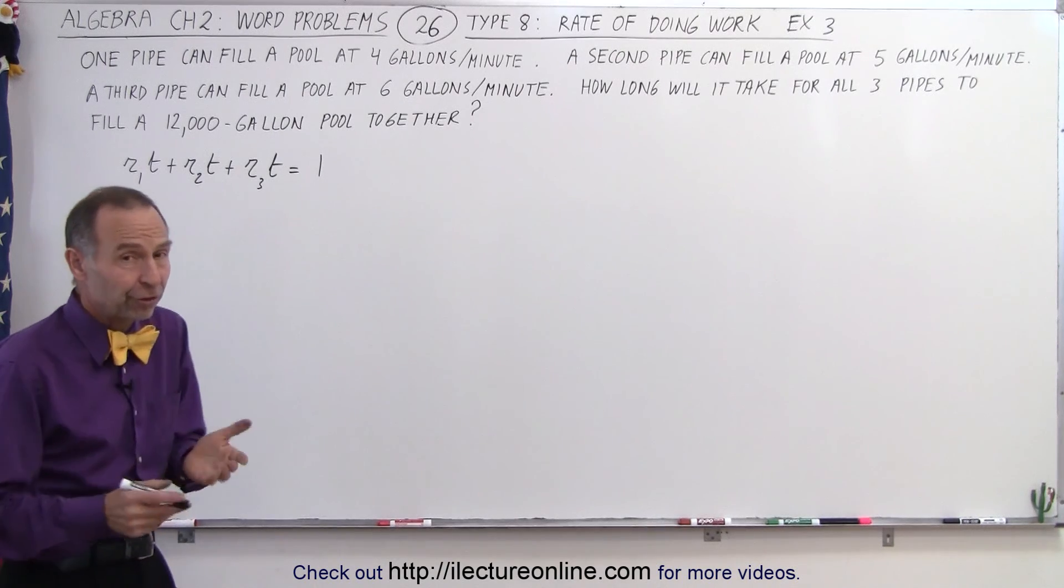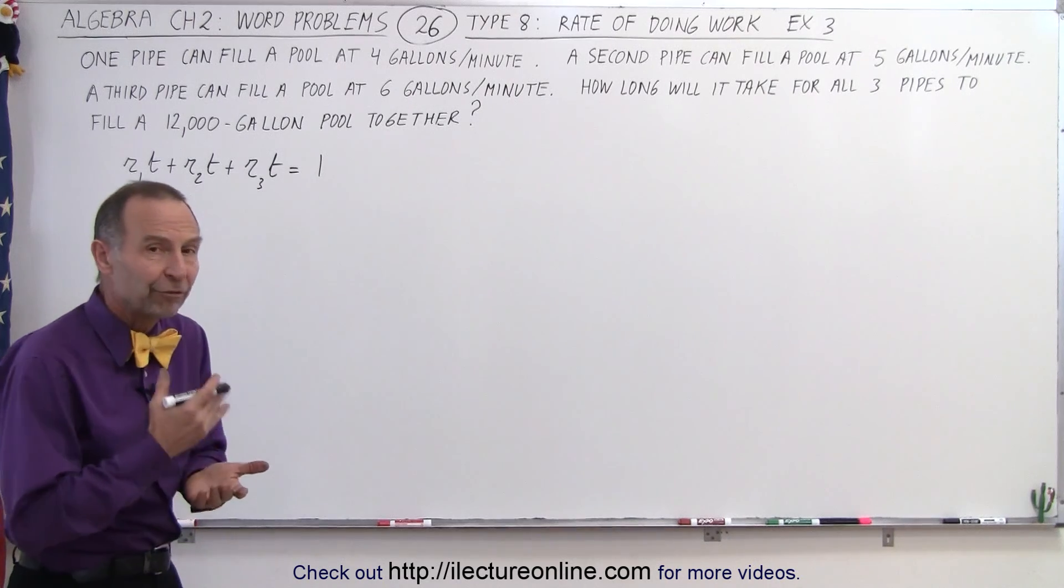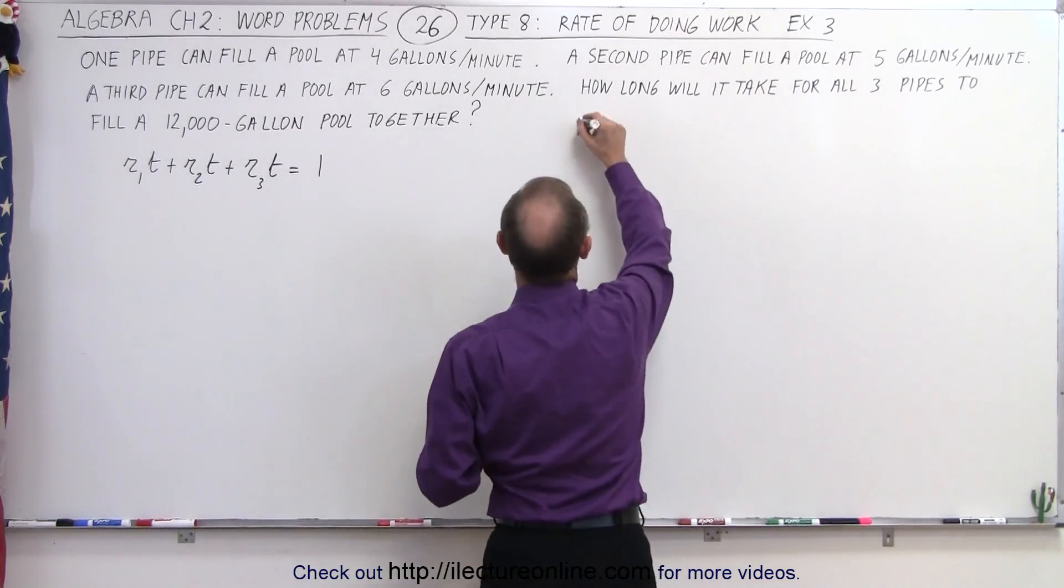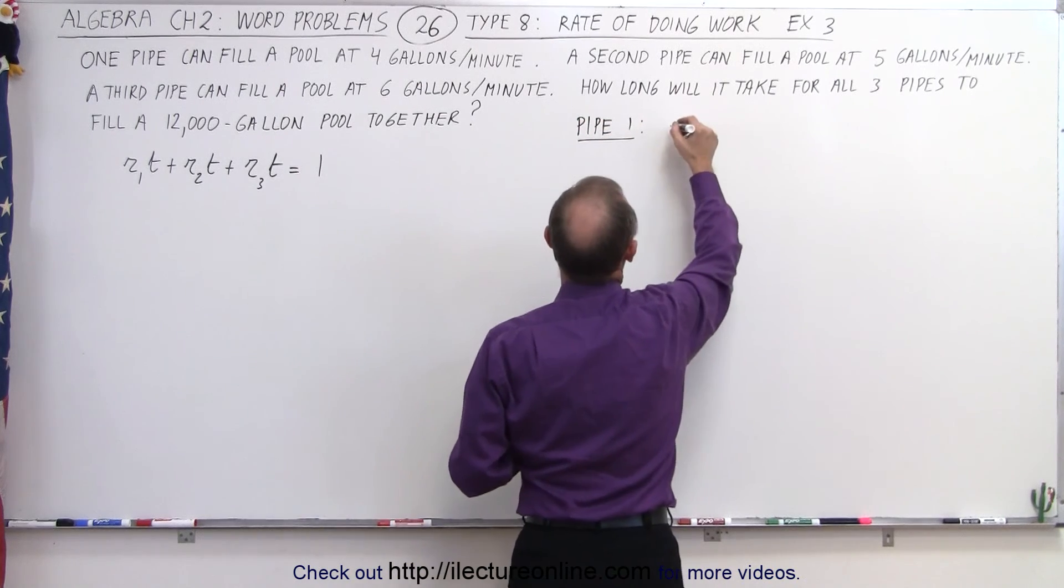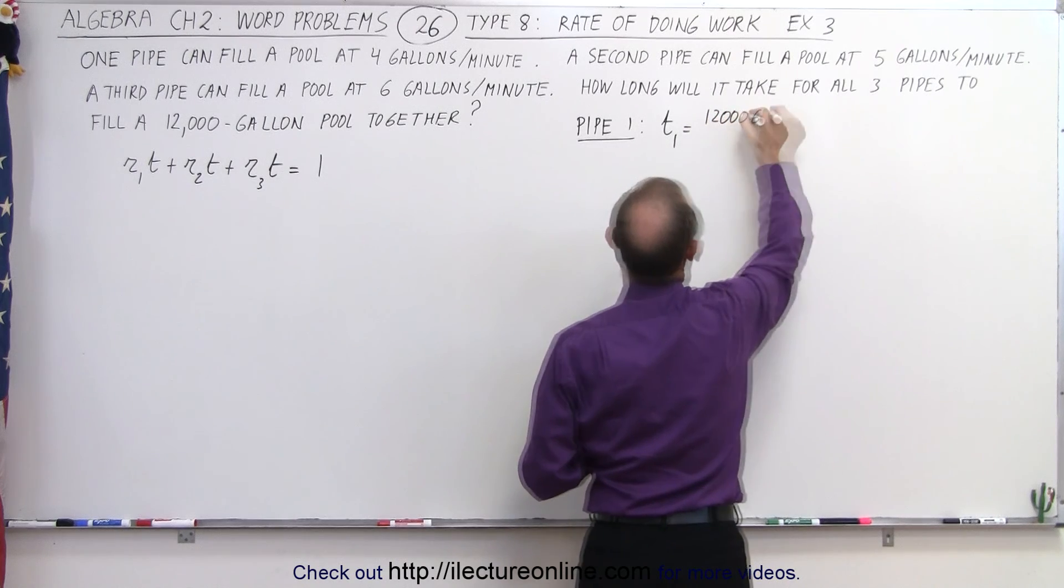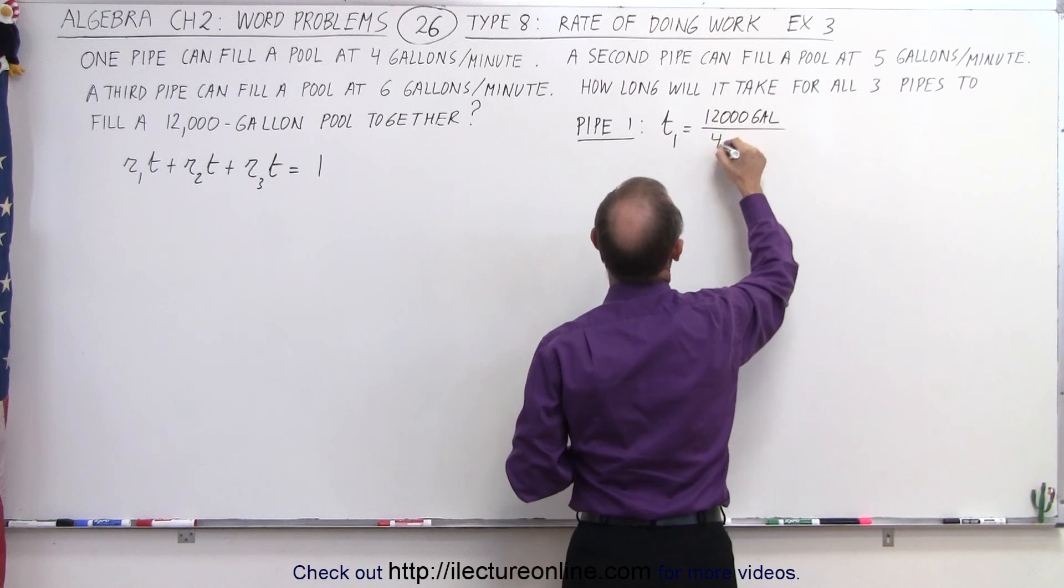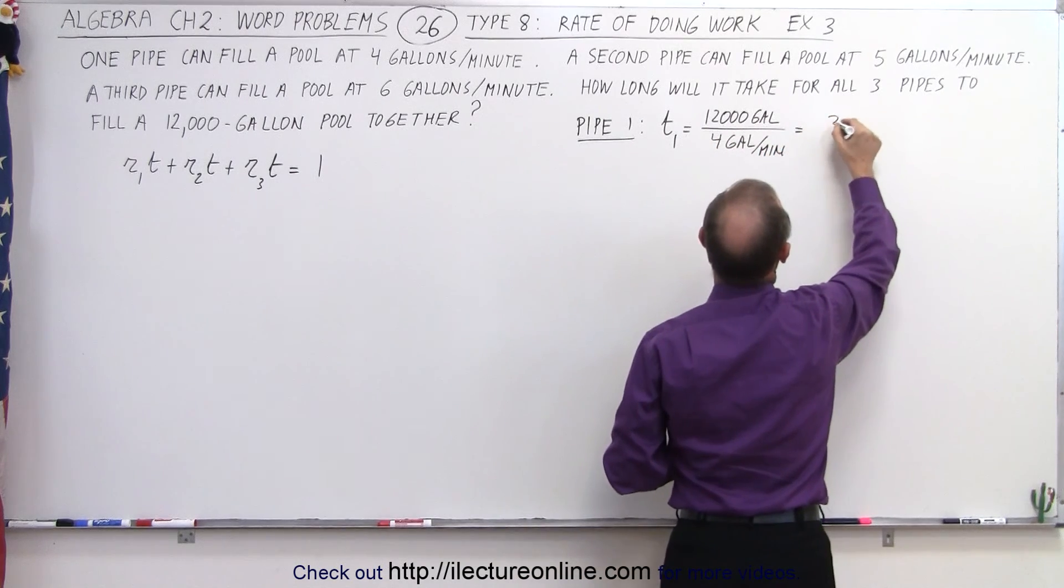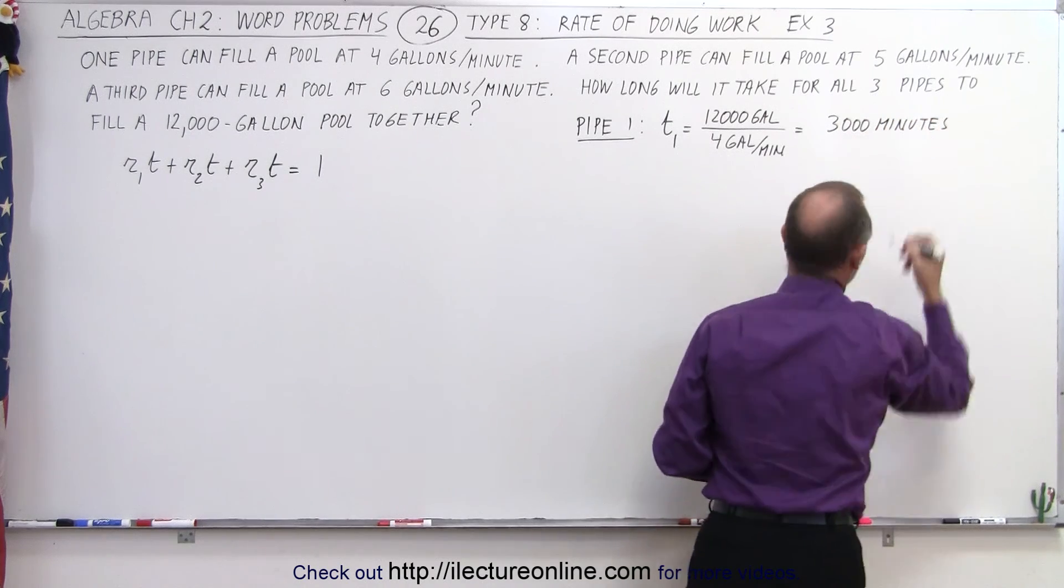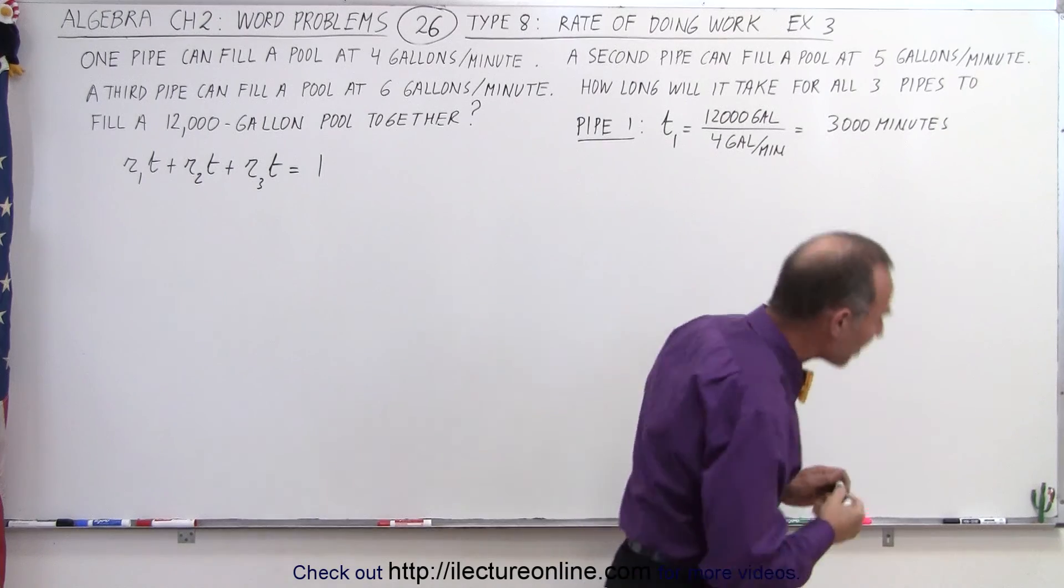So what we need to do first, since we weren't given that information, how long would it take for each pipe to fill the pool by themselves? For pipe 1, the total time T1 would be equal to 12,000 gallons divided by 4 gallons per minute, which would be equal to 3,000 minutes. And 3,000 minutes, let's see here, 3,000 divided by 60 would be 50 hours.